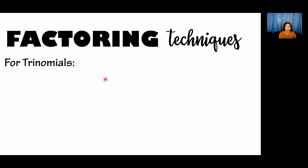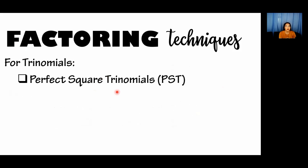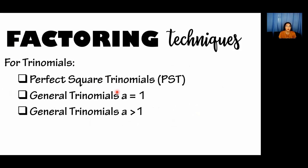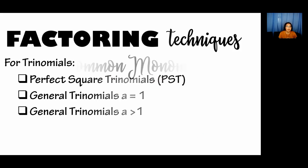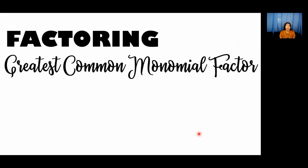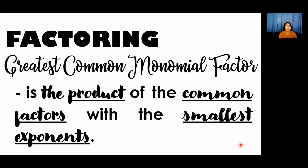There are also factoring techniques for trinomials: perfect square trinomials, general trinomials where A equals 1, and general trinomials where A is greater than 1. Trinomials are polynomials having three terms. So let's start with factoring greatest common monomial factor. Ano nga ba yung GCMF? The GCMF is the product of the common factors with the smallest exponent.